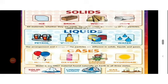In our surroundings, we see many substances such as wood, oil, smoke, air, etc. All these substances occur in different states. Their properties are also different according to their state, such as solid, liquid, and gaseous.